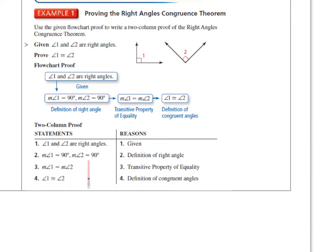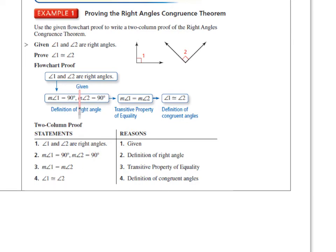If angle 1 is 90 and angle 2 is 90, then you can say the measure of angle 1 equals the measure of angle 2 by the transitive property — you could also put substitution there — which means angle 1 is congruent to angle 2 by the definition of congruent angles. Here's the same exact thing in a flow chart proof: you put the statement in the box, like angle 1 and angle 2 are right angles, and you put the reason underneath the box, so that would be "given."